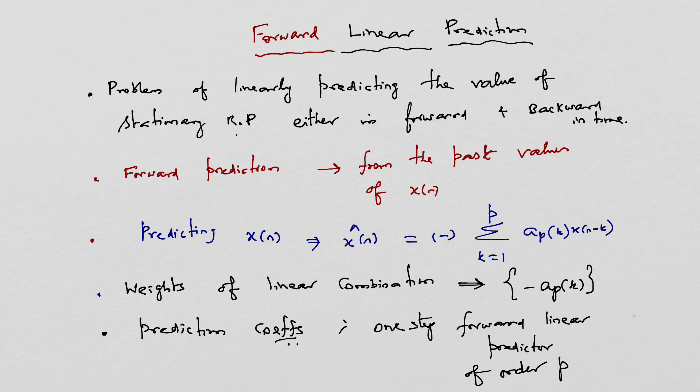Let us see the problem of linearly predicting the value of a random process — a stationary random process — the sample value of a stationary random process either in the forward direction, forward in time, or backward in time. Let us predict it. We begin with the problem of predicting a future value of a stationary random process from the observation of past samples of the process.